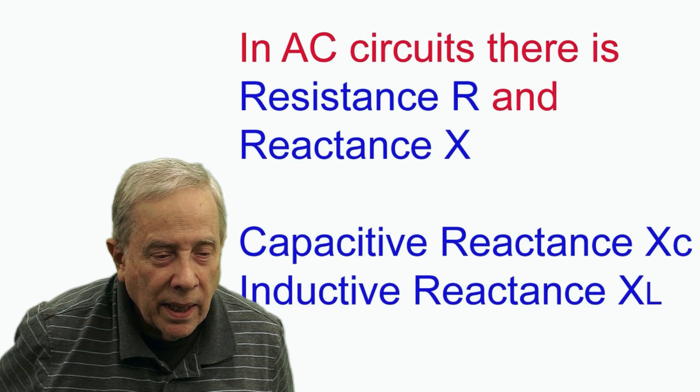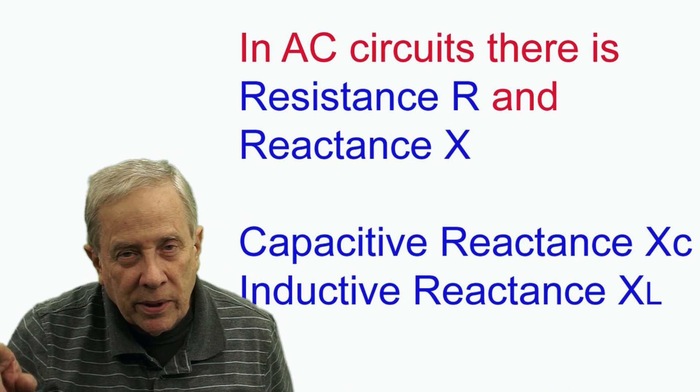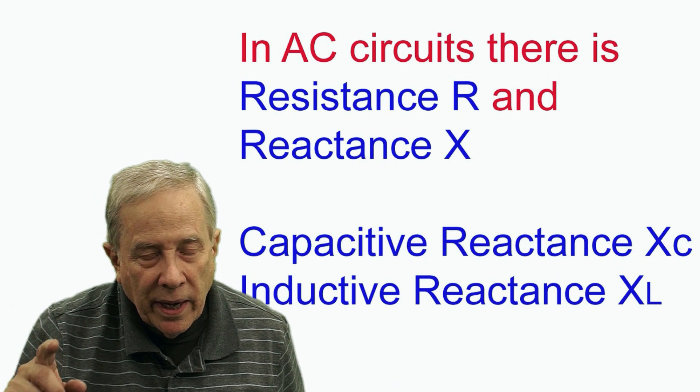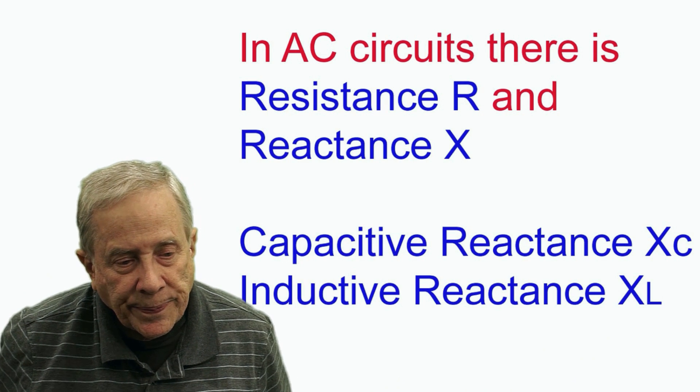In AC circuits — and AC is an alternating current, and RF is an alternating current — it generates a field. Capacitive reactance is labeled X with a small C, and inductive reactance is X with a small L.